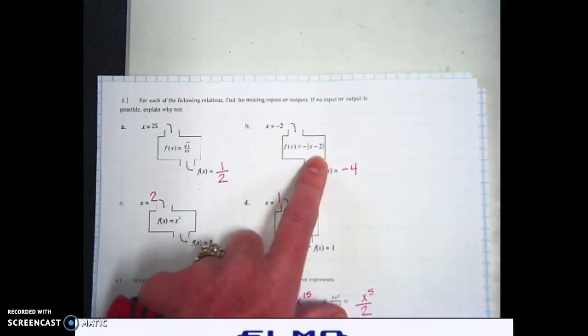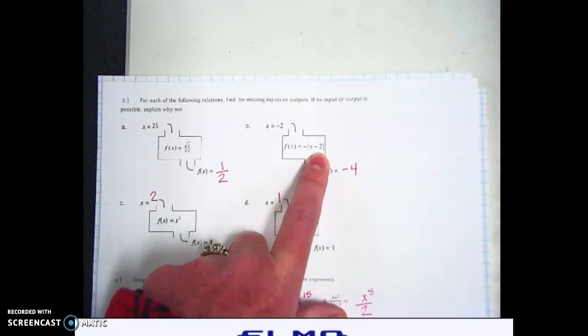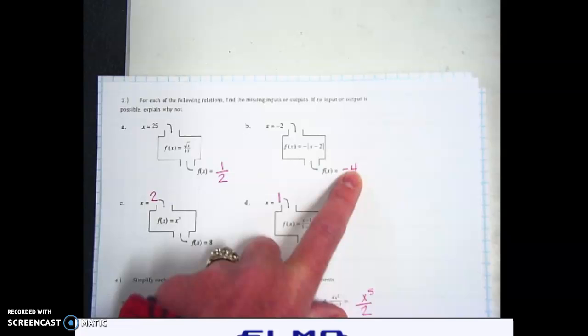Part B, if we plug in a negative 2, negative 2 minus 2 is negative 4. You take the absolute value of that, which is positive 4, but then there's a negative sign out front, so it should be negative 4.